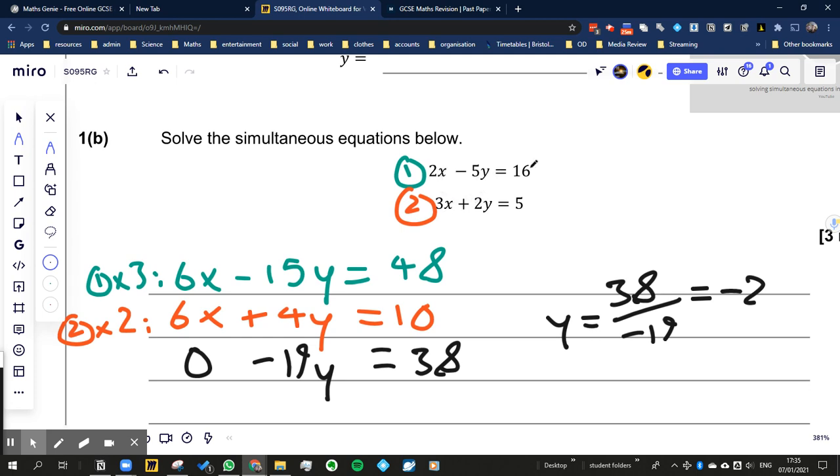So what we're going to do is we're going to times this by 3 and we're going to times this by 2. And then we'll end up with a 6x and a 6x here.